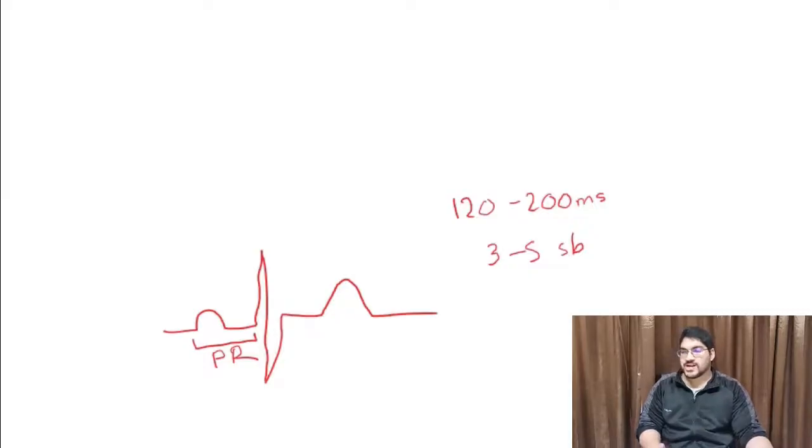The way I like to think about it is in terms of a road. If the P-R interval is too long, more than five blocks, it means there's a roadblock somewhere. And if the P-R interval is too short, less than three blocks before you get to the QRS complex, it means there's a shortcut path that isn't supposed to be there.